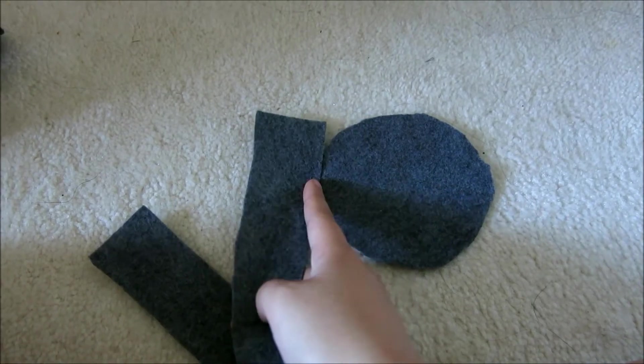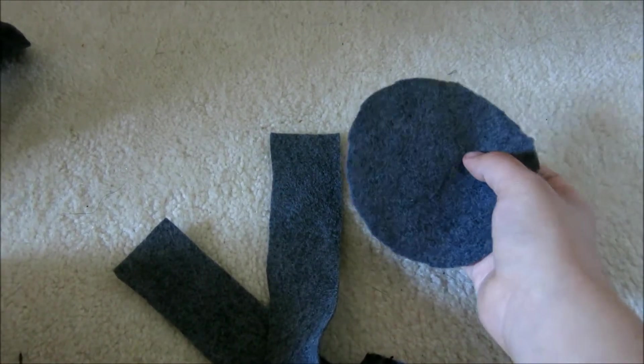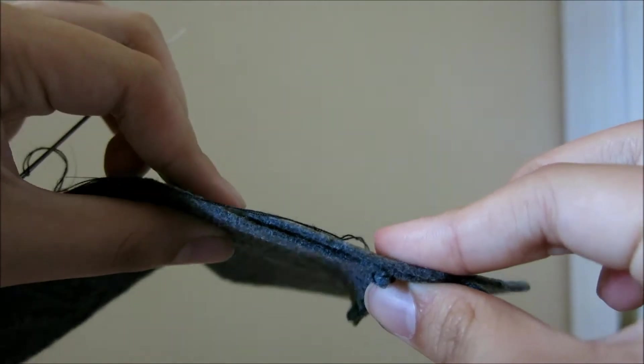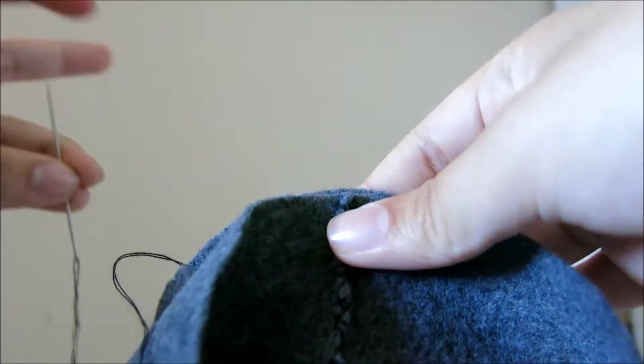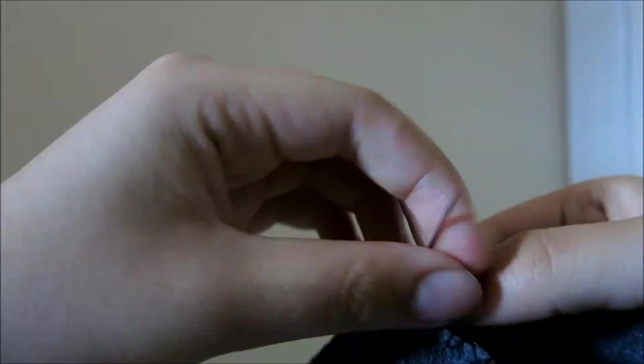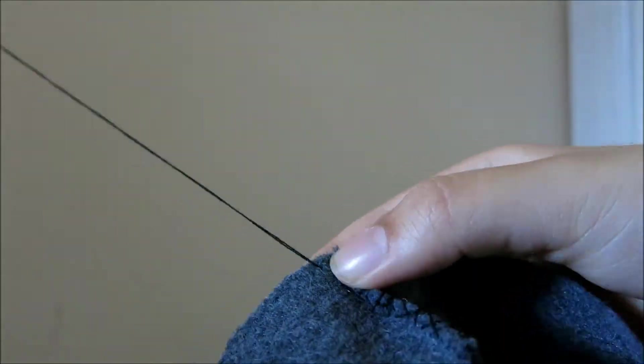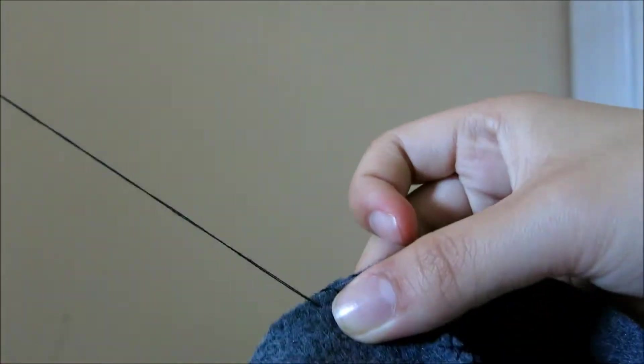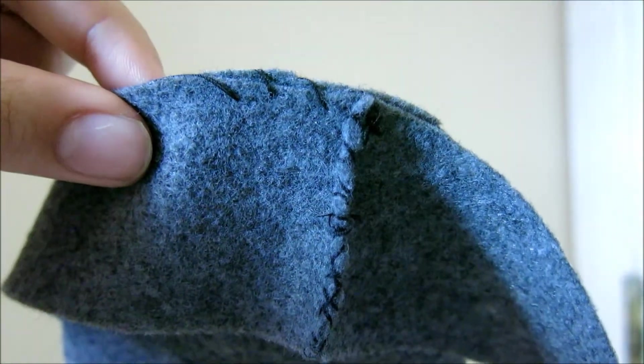But now that I have it, I'm just going to sew the rectangle onto the circle. You're going to want to match up the edges like this. See, there's the edge of my circle and then here's the edge, one of the edges of my rectangle. And then you're just going to want to sew all the way around.